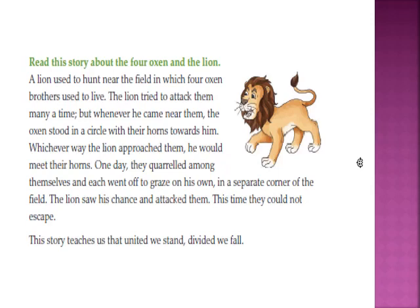Let me read the story once again. A lion used to hunt near the field in which four oxen brothers used to live. The lion tried to attack them many a time, but whenever he came near them, the oxen stood in a circle with their horns towards him. Whichever way the lion approached them, he could meet their horns — so he was not able to approach them. One day, they quarreled among themselves and each went off to graze in a separate corner of the field. The lion saw his chance and attacked them. This time, they could not escape because each one of them was in a different direction, so the lion was easily able to attack the oxen.